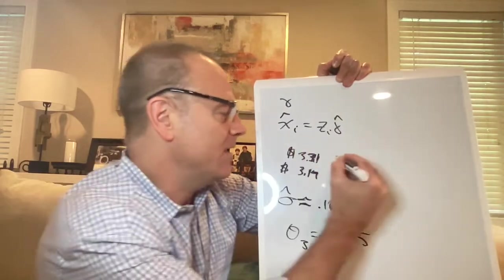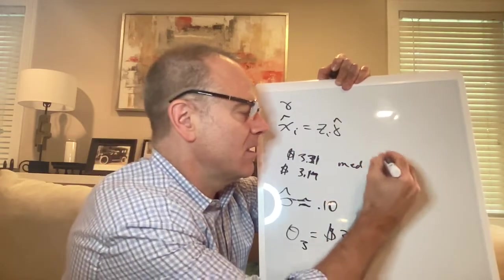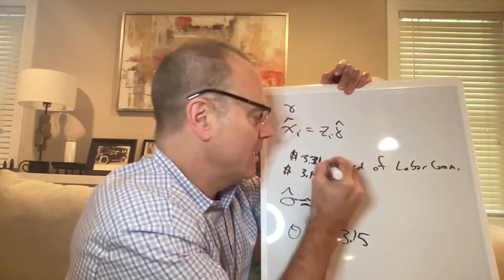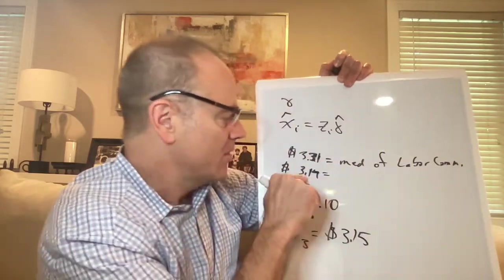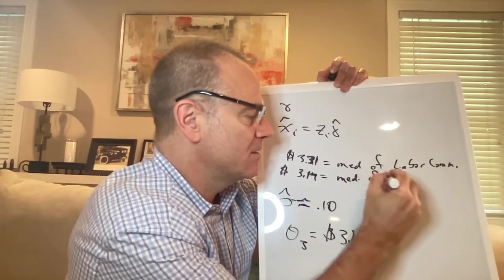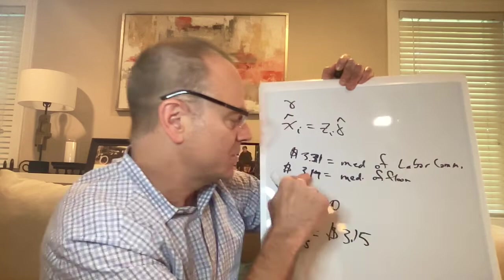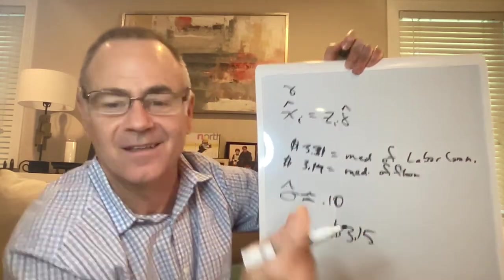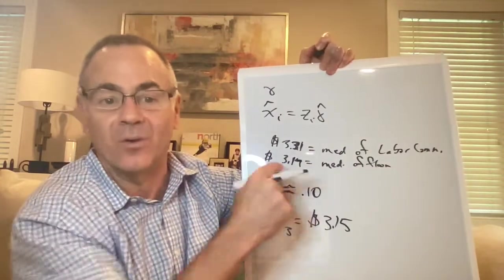And remember, the median of the labor committee was 331, the median of the floor, this is Crable and Rivers' estimates, it was 317. And he asked, well, what was the final policy? The answer was 315. So it was closer to the median of the floor.